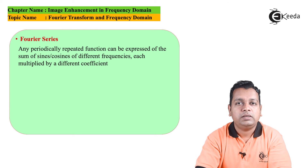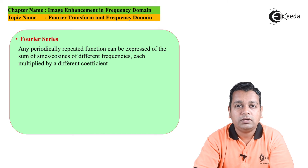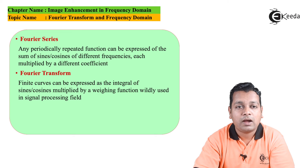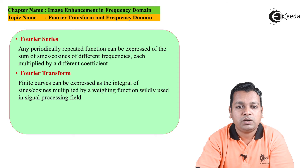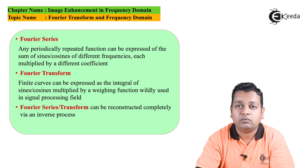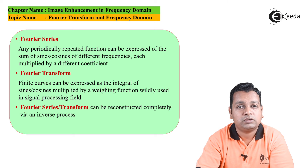The Fourier series states that any periodically repeated function can be expressed as the sum of sines or cosines of different frequencies, each multiplied by a different coefficient. The second tool, the Fourier transform, states that finite curves can be expressed as the integral of sines or cosines multiplied by a weighting function — widely used in signal processing. For both tools — Fourier series and transform — complete reconstruction is possible via the inverse process, called the inverse transformation.